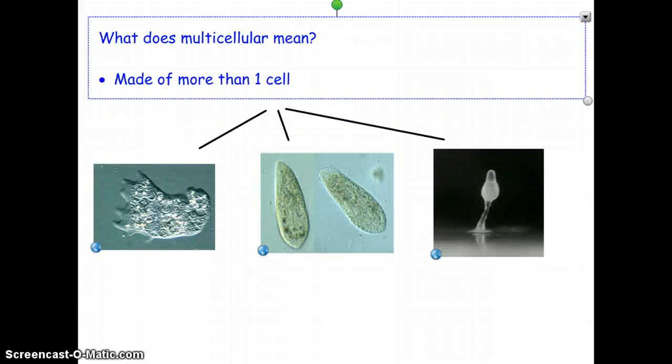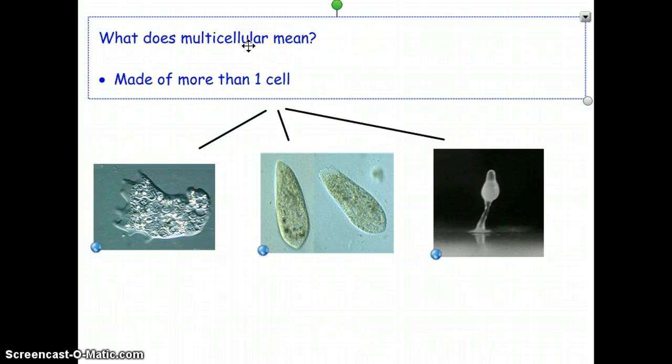So what does it mean to be multicellular? Multi means many, and cellular means the cell, as you guys know already. So to be multicellular means that you're made of more than one cell.